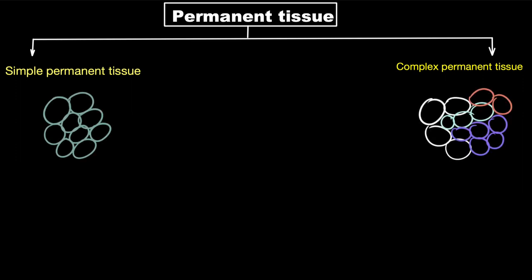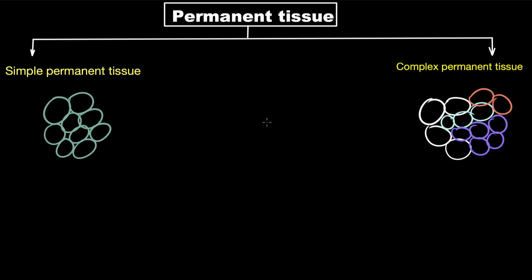For example, here you can see all the same cells forming one tissue — we call it simple permanent tissue. But here, all these different colored cells are different types coming together performing one particular task, and we call it complex permanent tissue. In reality, these tissues look nowhere near what I have made on screen — I have oversimplified things here just for the sake of explaining.